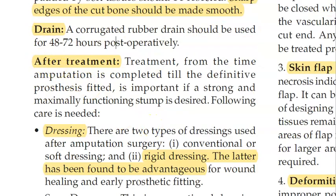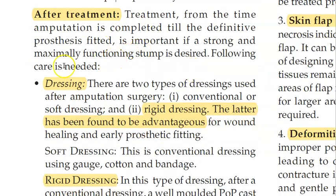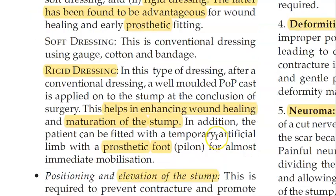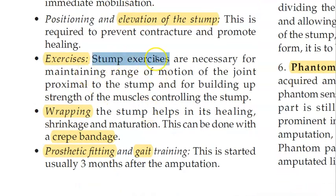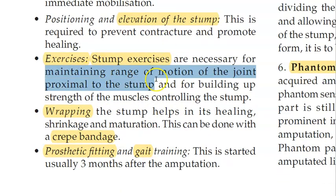After the amputation, for post-operative care, dressing the stump is important. Rigid dressing is preferred over soft dressing because it enhances wound healing and maturation of the stump, facilitating prosthetic fitting. Elevation of the stump also aids healing. Stump exercises should be done to maintain range of motion, with the goal of future prosthesis fitting.